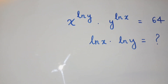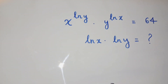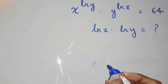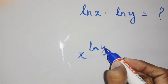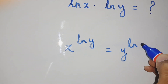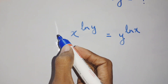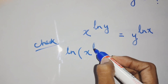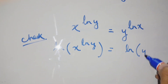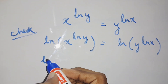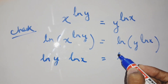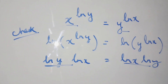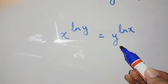There is one more approach. We use the formula that x to the power ln y is the same as y to the power ln x. We can verify this by taking ln of both sides: ln y · ln x equals ln x · ln y, which are the same. So x to the power ln y equals y to the power ln x.